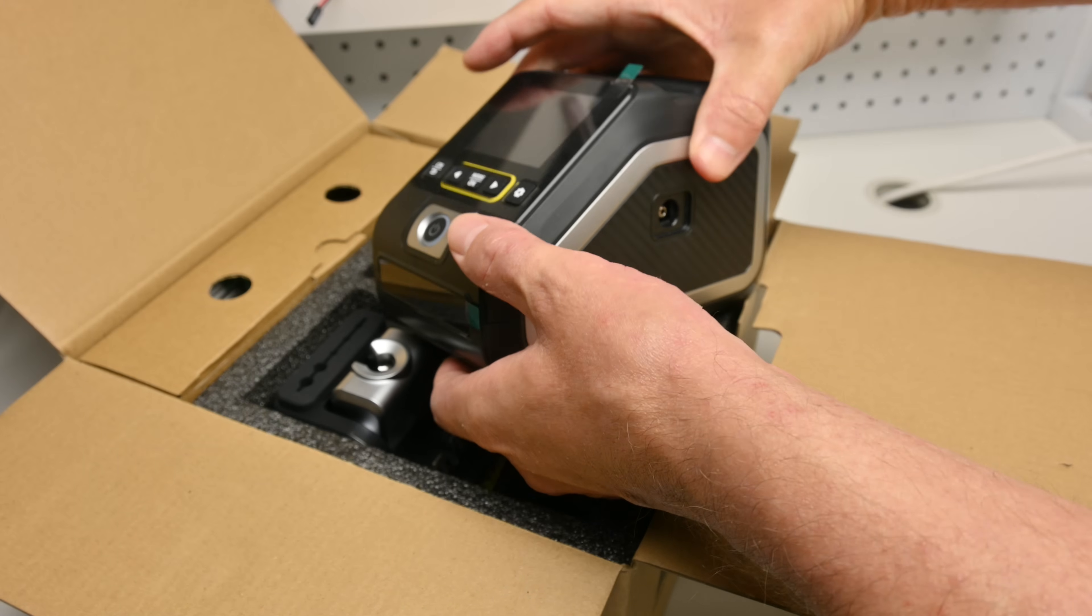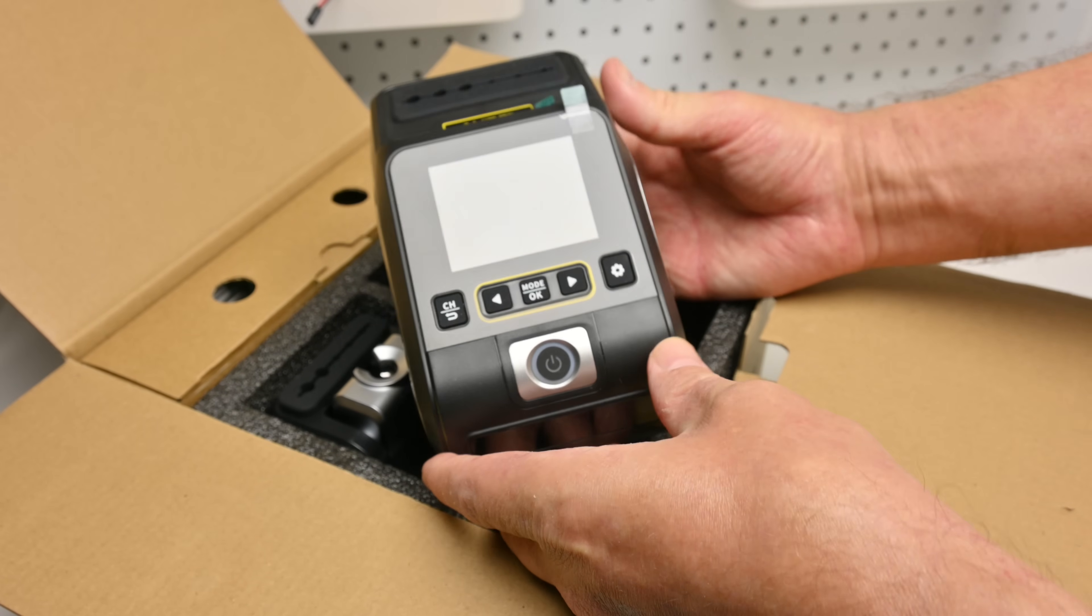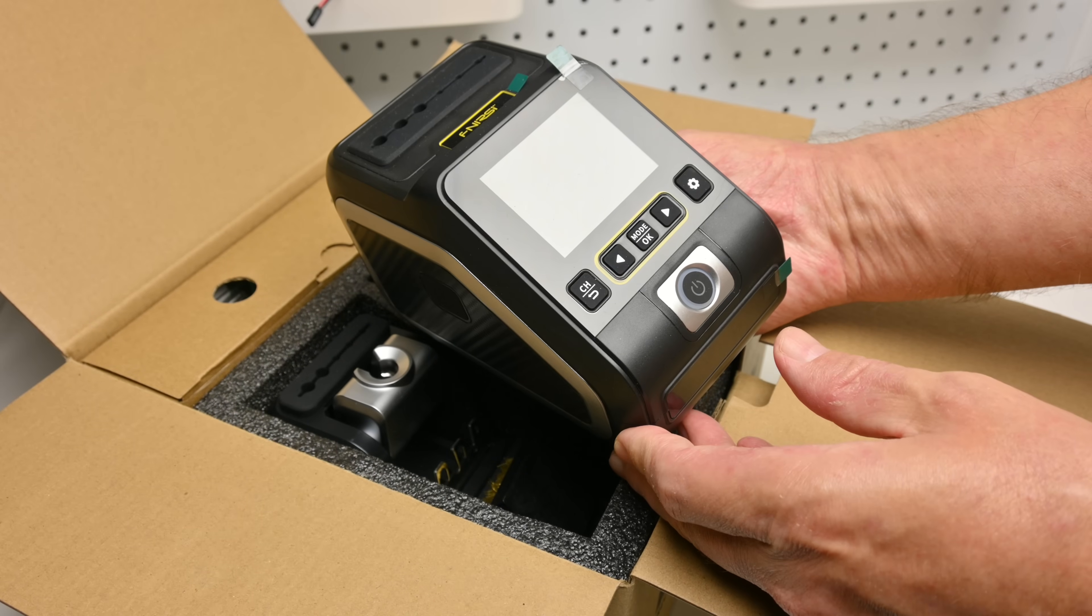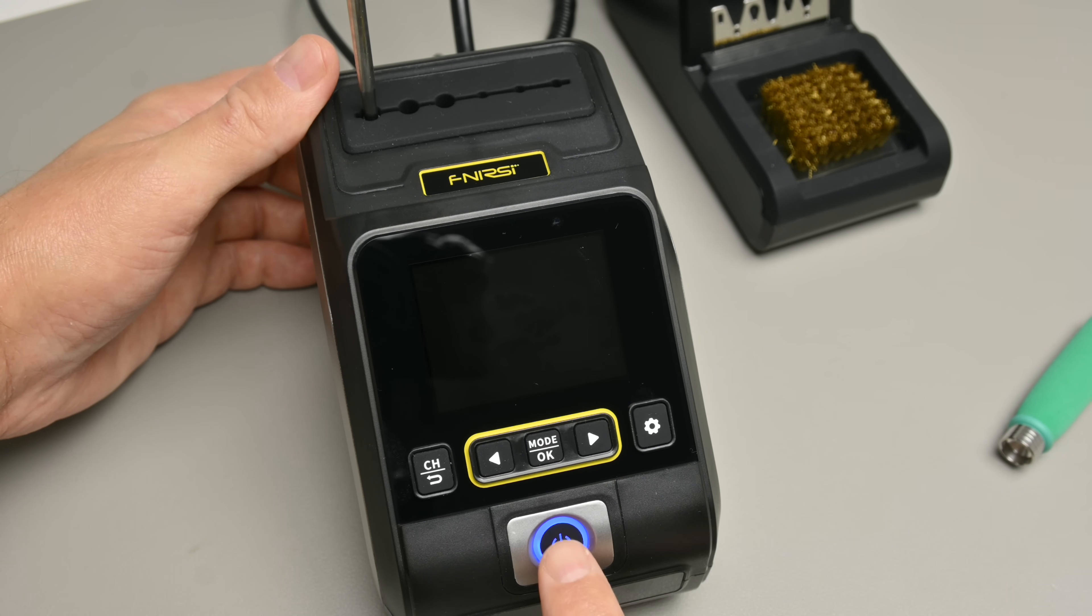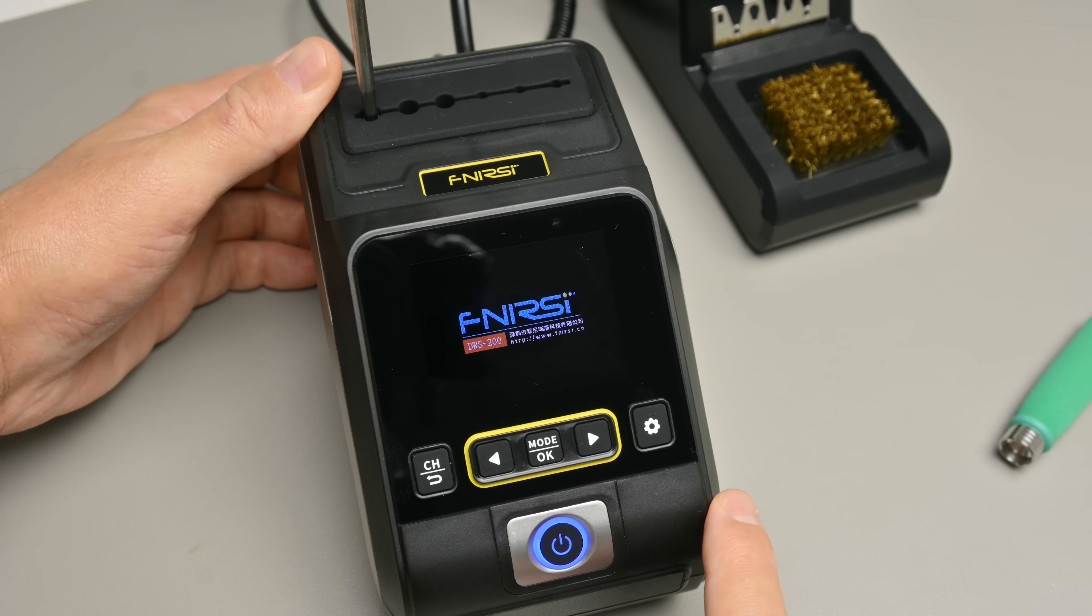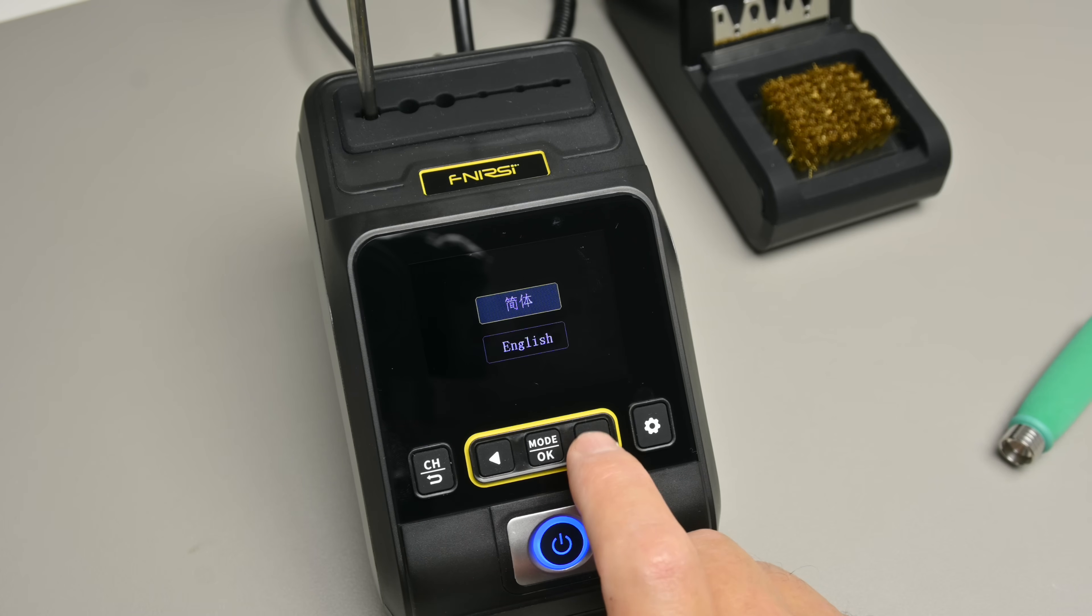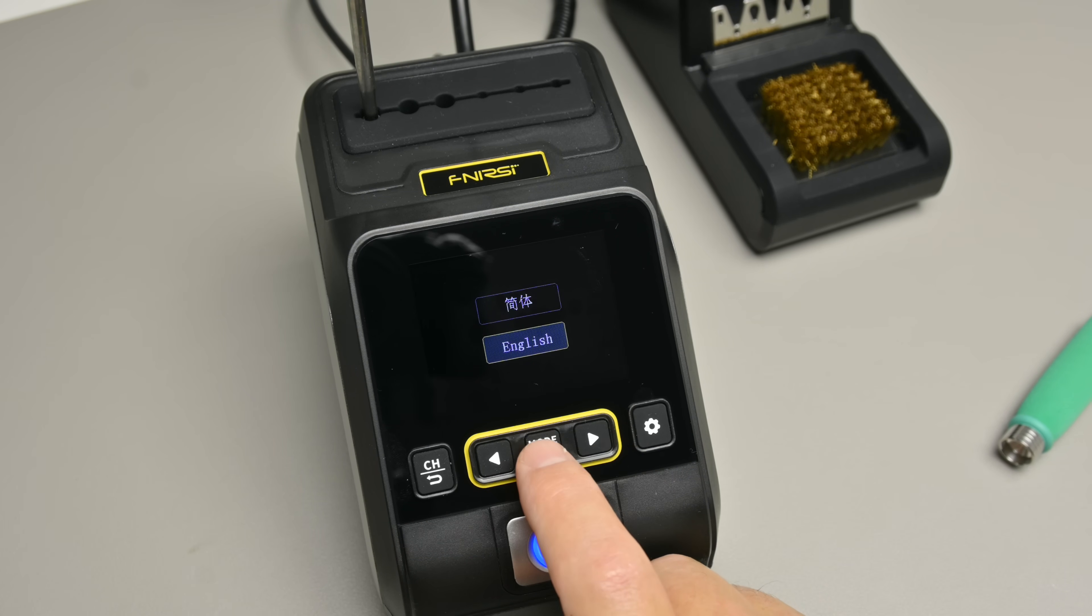Let's have a look what's inside the box. Here we can see the main soldering station. It is fully digital with a nice 2.8 inch LCD screen and it is compatible with mains power from 100 to 240 volts protected with a fuse.